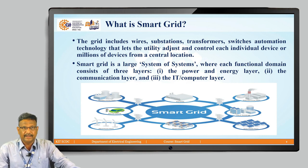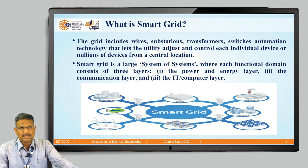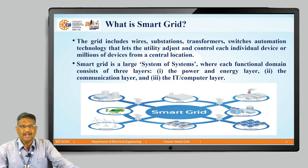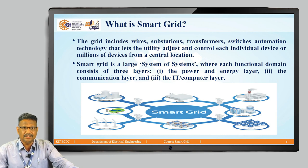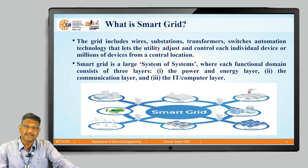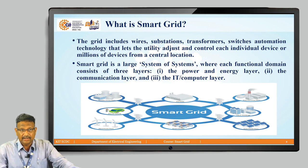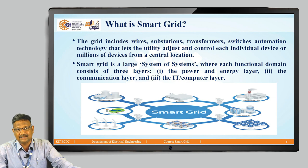What is a smart grid? The grid includes wires, substations, transformers, switches, and automation technology that lets the utility adjust and control each individual device or millions of devices from a central location, including electricity power plants at remote locations. It is a system of systems where each functional domain consists of three layers: the power and energy layer, the communication layer, and the IT — computer — layer.